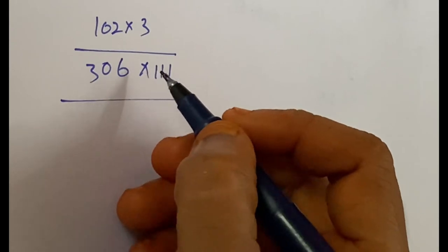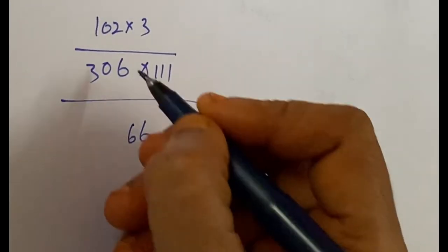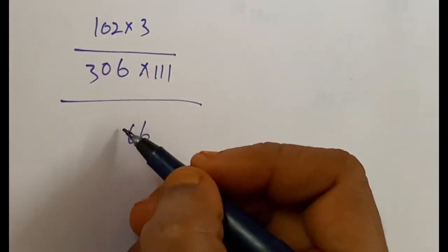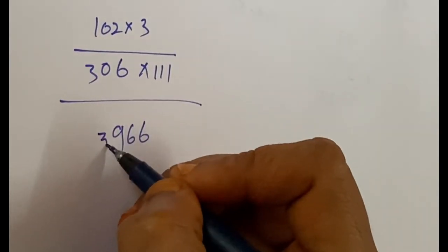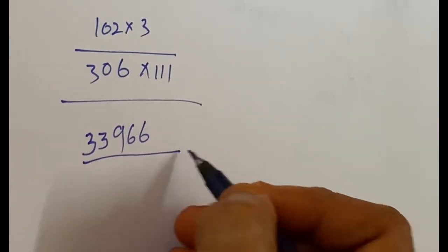Now we can easily calculate it. So here, 6. 6 plus 0 is 6. 6 plus 0 plus 3 is 9. 0 plus 3 is 3. Here, 3 as it is. So this is the answer.